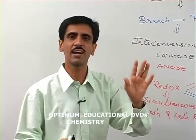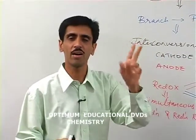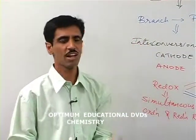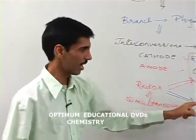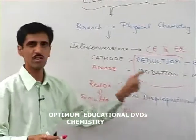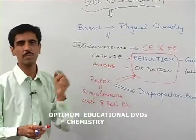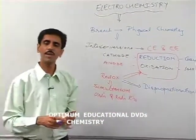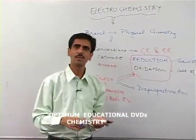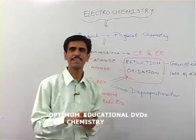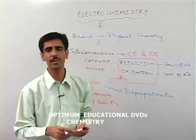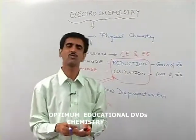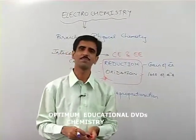At the cathode, reduction always takes place — that is gain of electrons. At the anode, oxidation always takes place — that is loss of electrons. In electrochemistry, both these reactions occur simultaneously, and these are called redox or disproportionation reactions. Now we move on to other basic terms involved in this chapter.